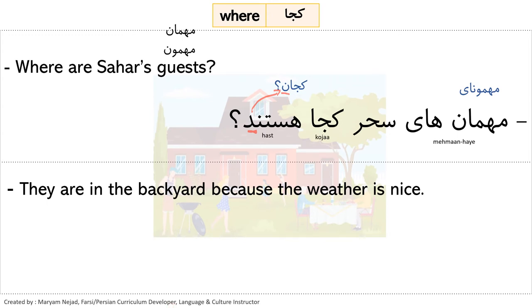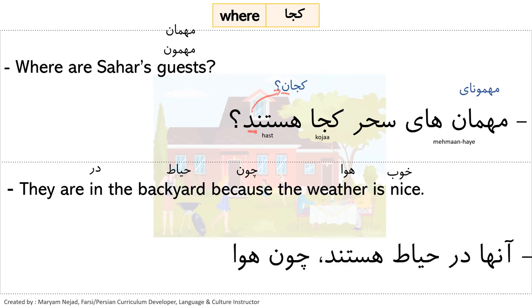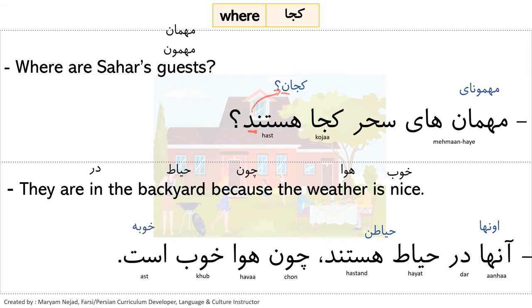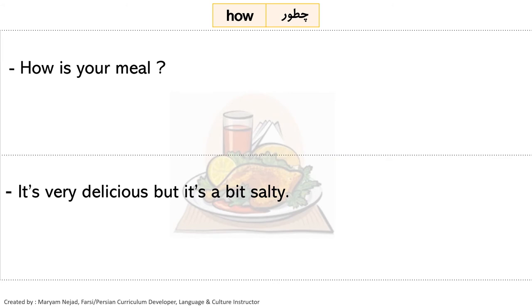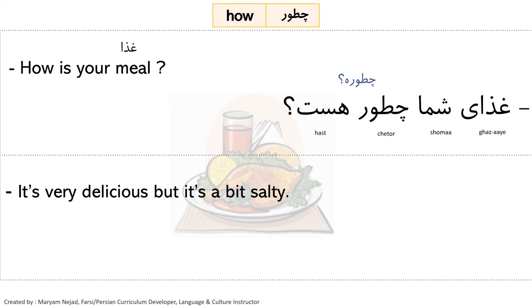The answer: 'They are in the backyard because the weather is nice.' In English we use 'in/at/on', but in Farsi all three are just 'dar'. 'Hayat' means backyard, 'chon' means because, 'hawa' means weather, 'khub' means nice. Formally: 'anha dar hayat hastand chon hawa khub ast'. Now moving to the interrogative 'chatur': 'How is your meal?' — 'ghaza' means meal, with an ezafa: 'ghaza ye shoma chatur hast', or contracted: 'ghaza ye shoma chatur'.